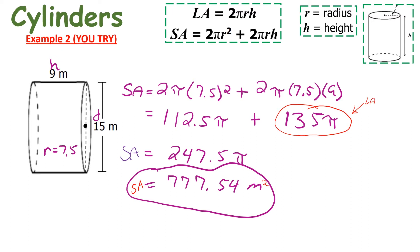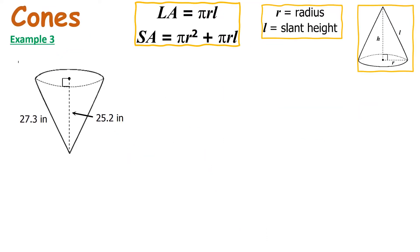Now we have a cone and we want to find the surface area, which will include finding the lateral area. The lateral area formula is π times r times l, where l is the slant height — it is slanted, not straight up.